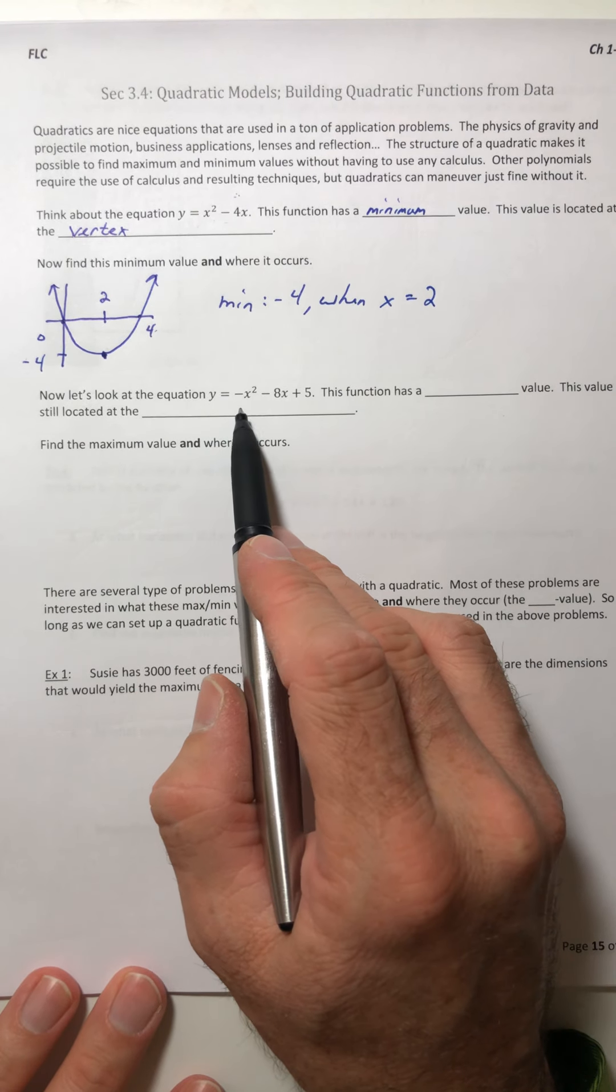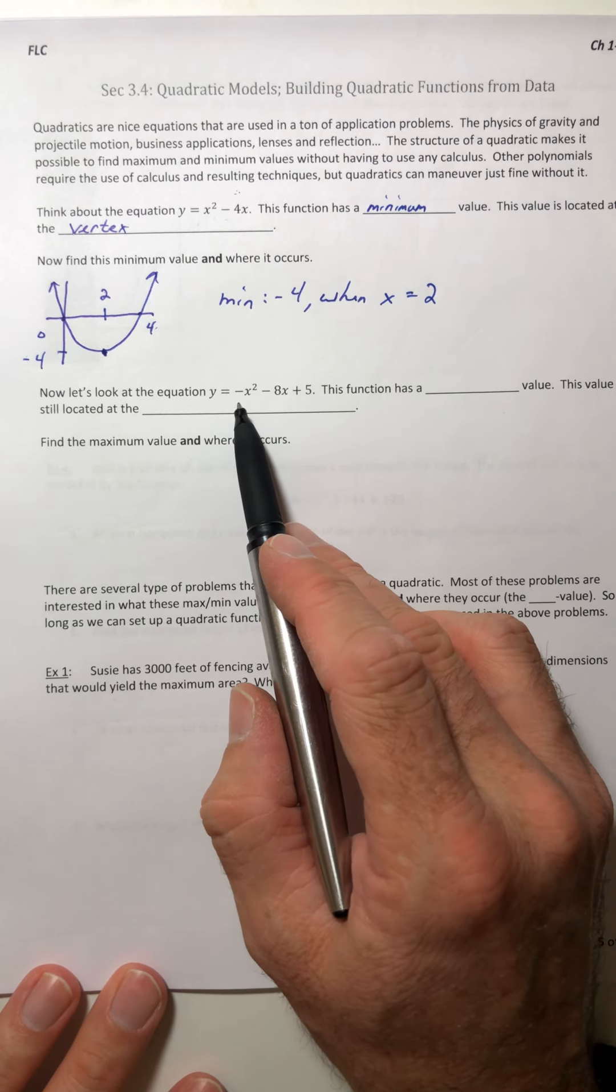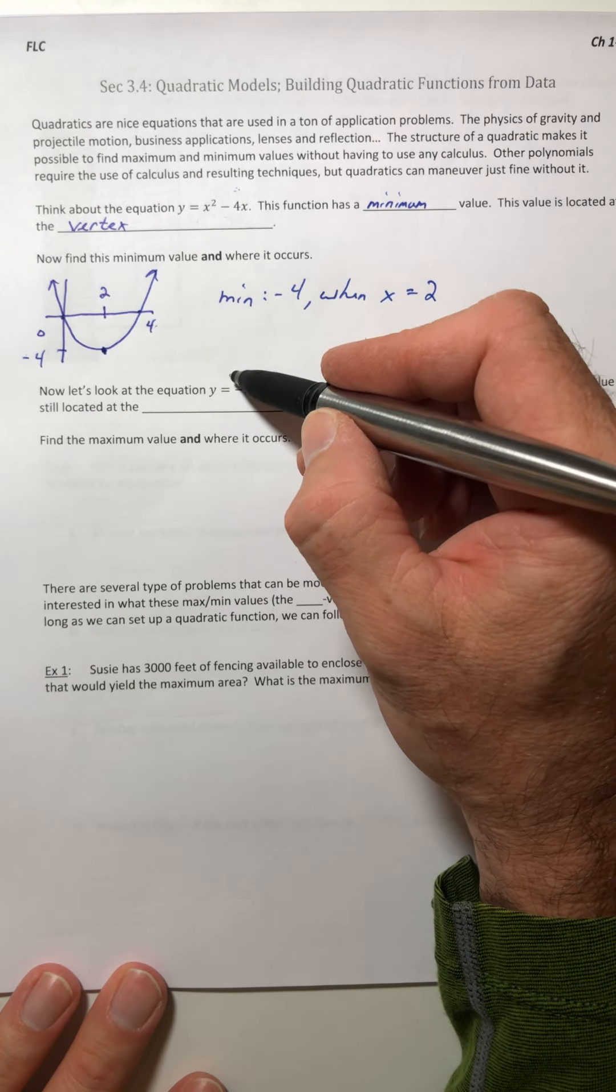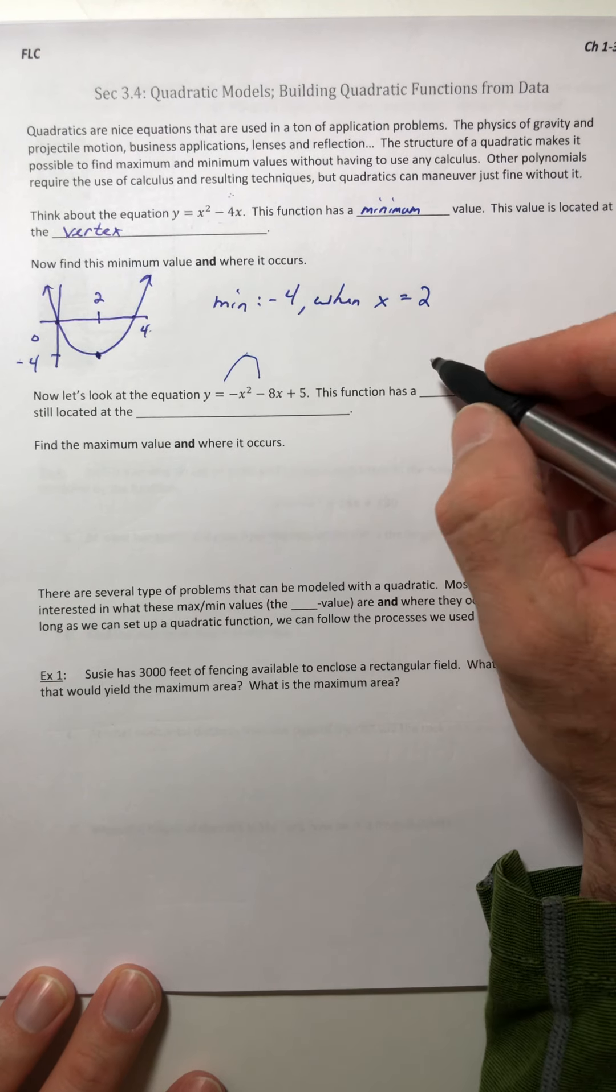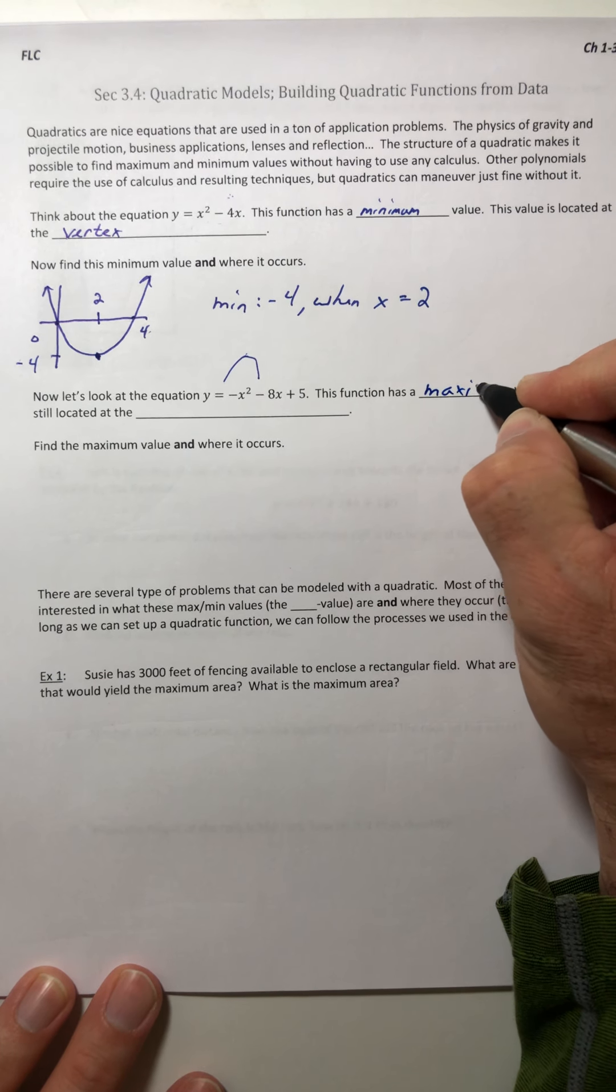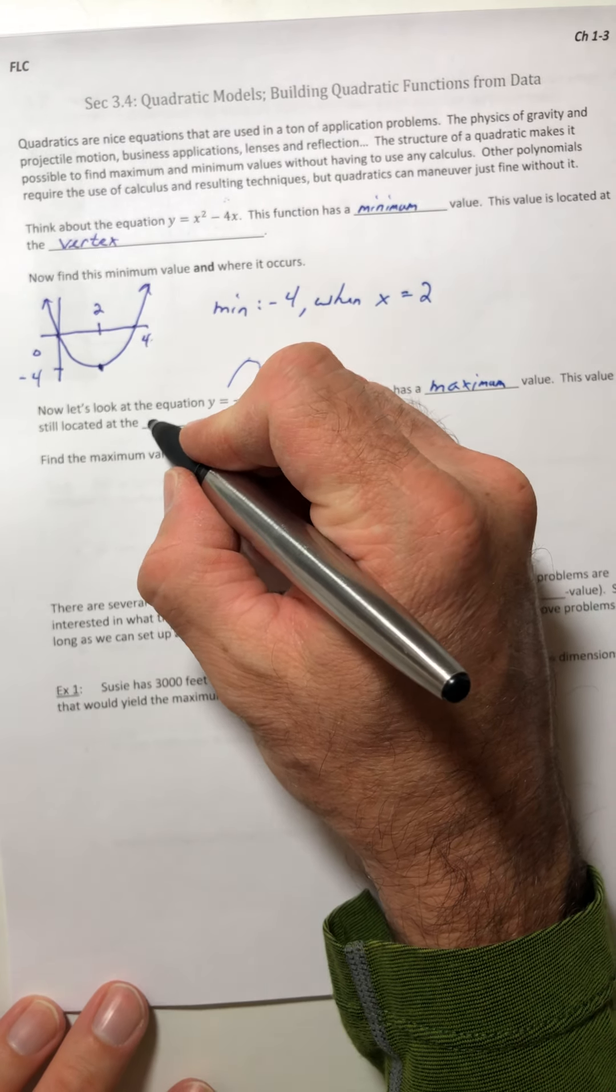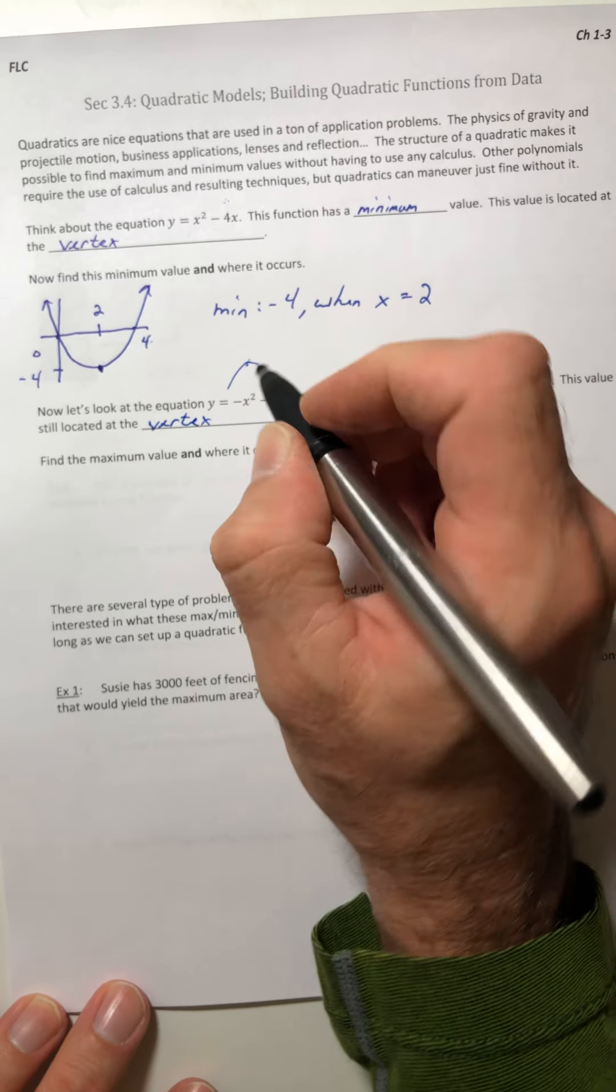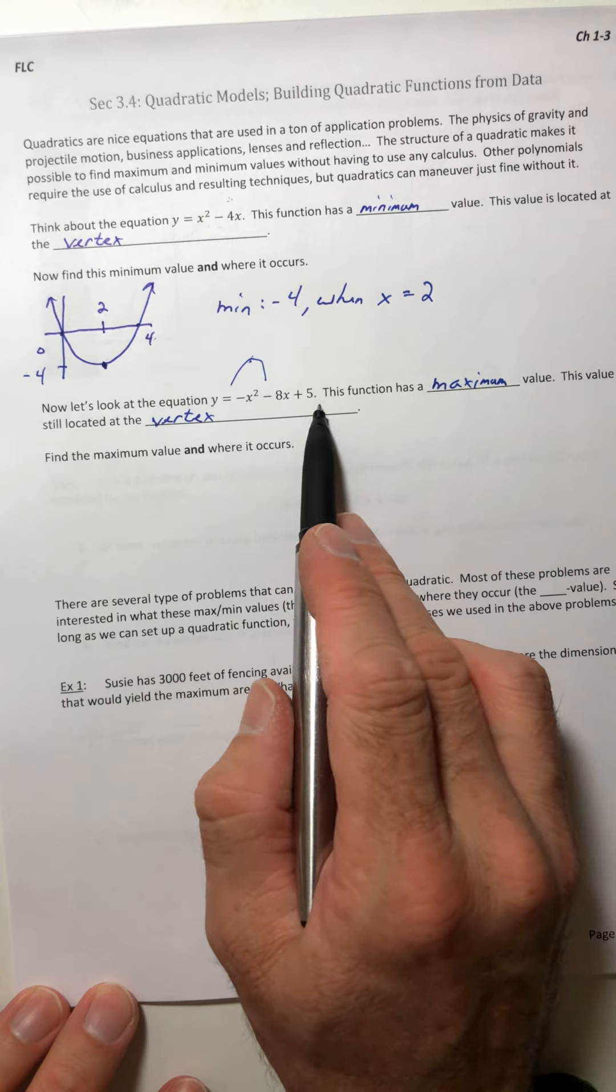Okay, so now let's look at the equation y equals negative x squared minus 8x plus 5. So if I were to draw this, because it's a negative x squared, that would give me an upside down parabola. So this value is still located at the vertex right there, right at the top. So find the maximum value and where it occurs.